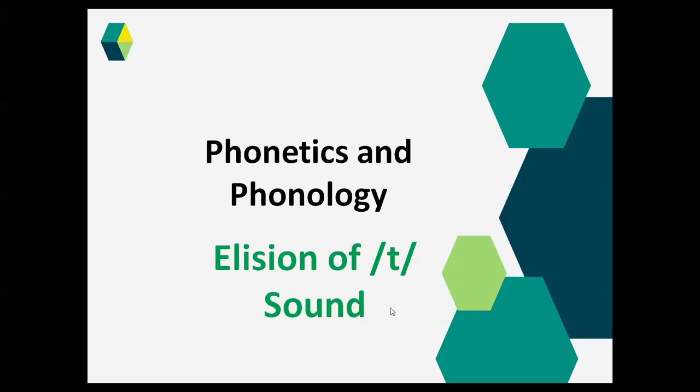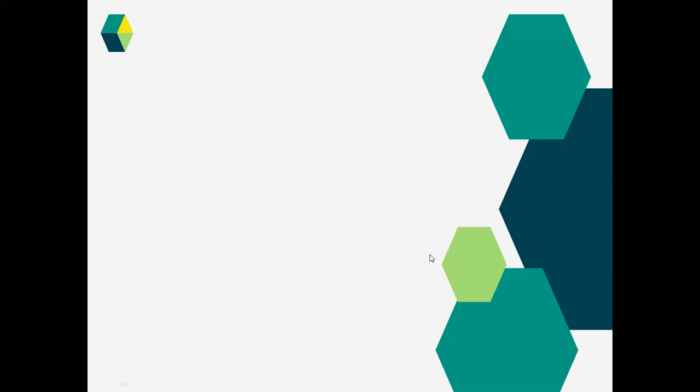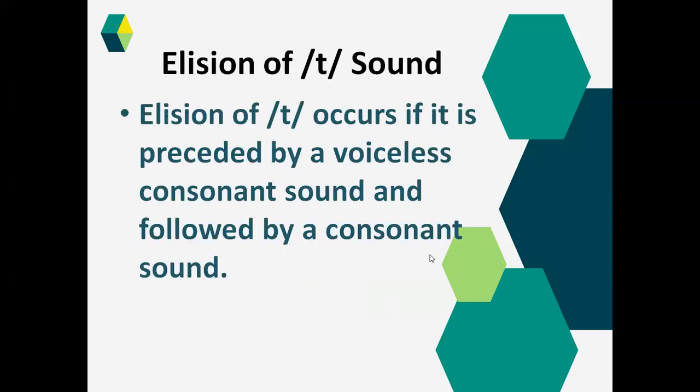In phonology, today we are going to talk about elision of the /t/ sound. Always remember, elision of /t/ occurs if it is preceded by a voiceless consonant sound and followed by a consonant sound. If any vowel sound comes before or after the /t/ sound, there will be no elision.